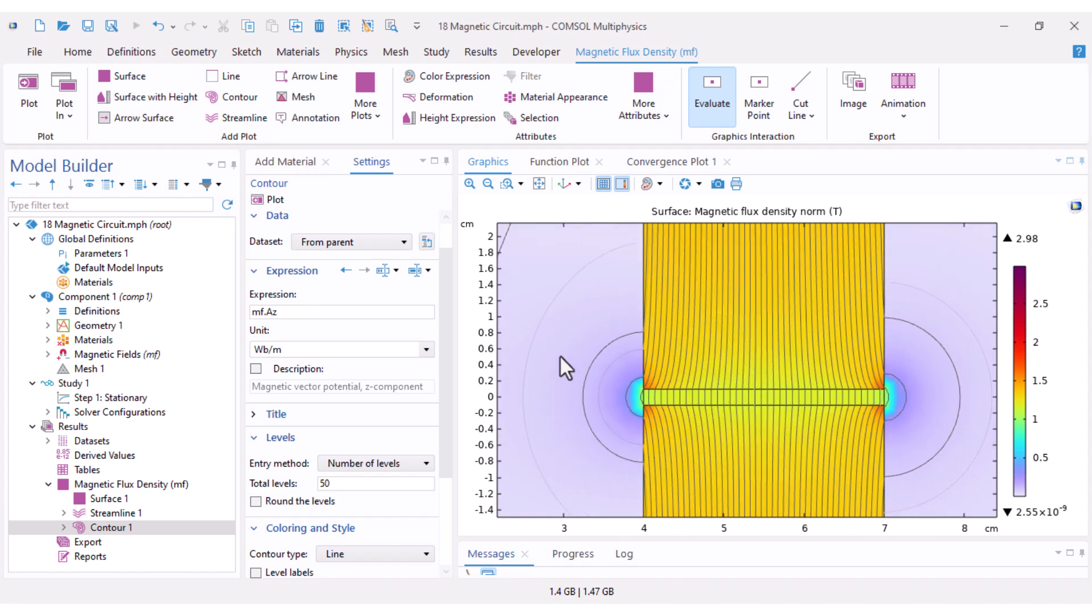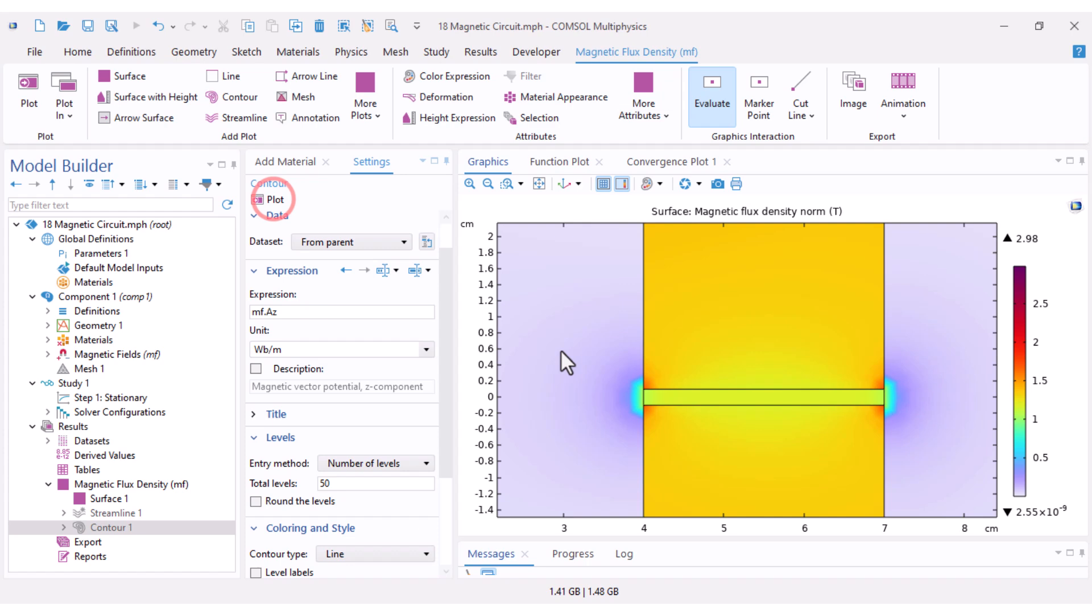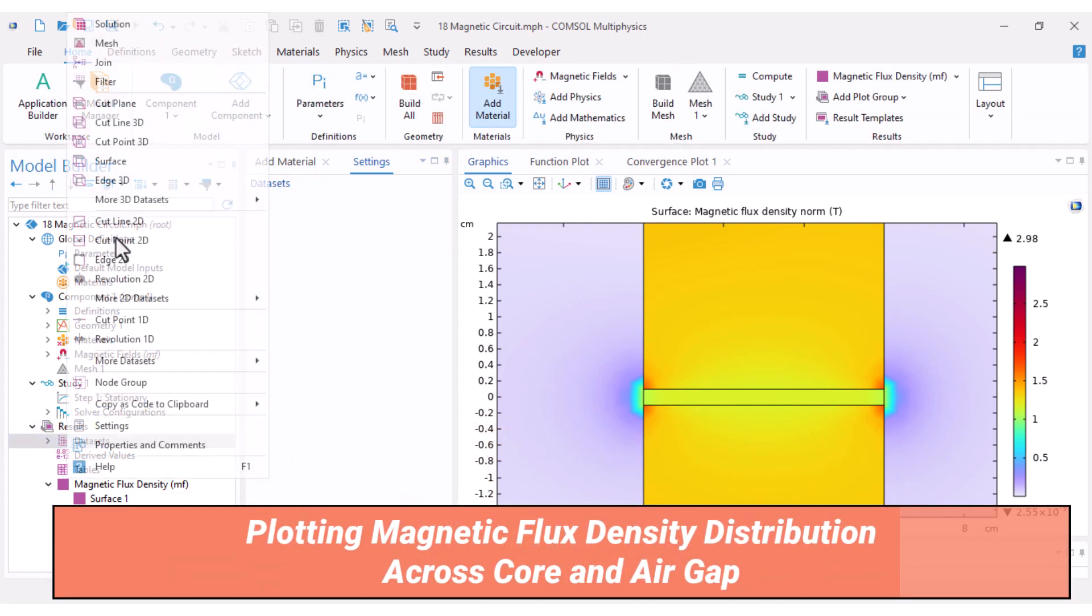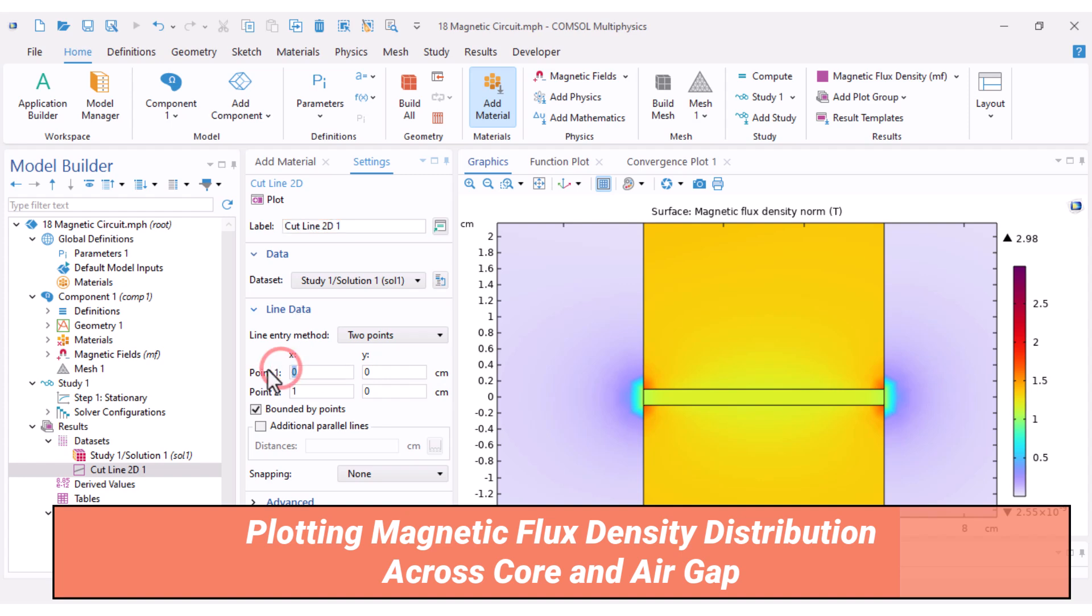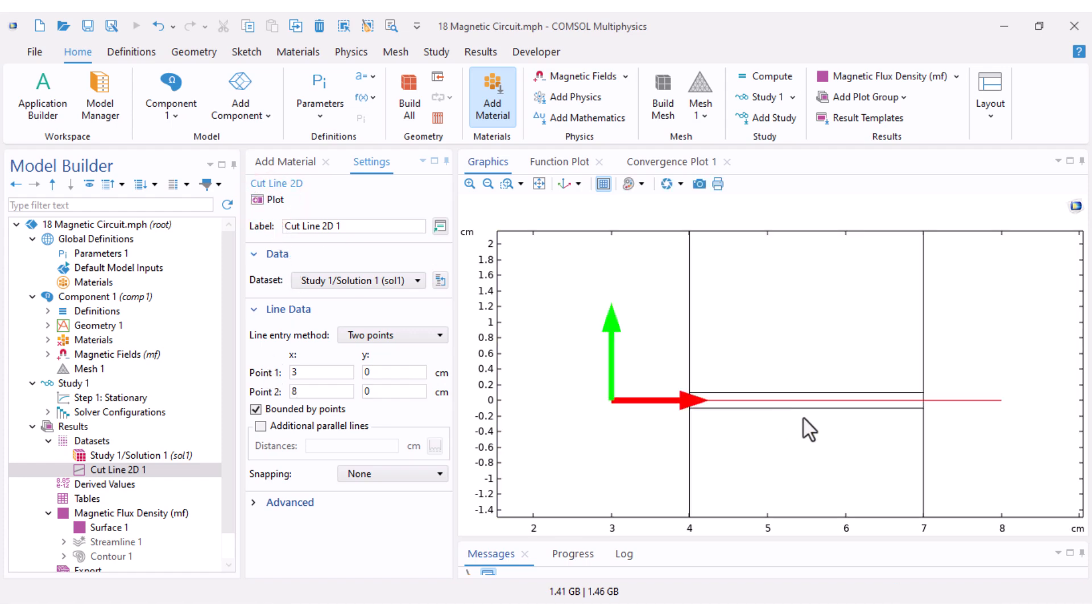Let's explore deeper. I want to inspect the magnetic flux density along a line, first across the air gap and then across the core itself. So I'll disable streamline and contour to make things clearer. Under dataset, right click, add a cut line 2D.